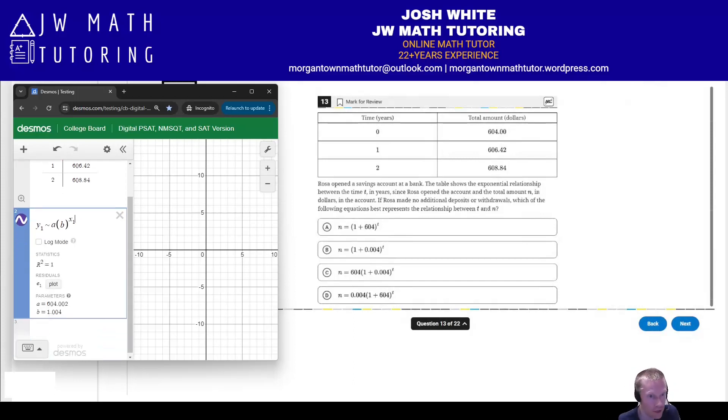Now we're just going to define, so the n in this case is equal to the y1 and the t is equal to the x. All right. So here we have our exponential regression. We want to see which matches the answer choices that we have. So first of all, notice in front of the parentheses, in other words, in front of the number being raised to the x1 value or to the t, we have 604.002.